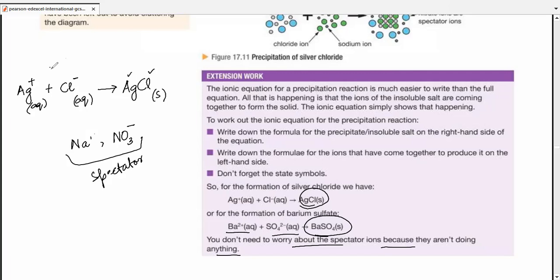You should be able to write ionic equations. You can use the previous method of writing the whole thing up, but this one is an easier one. That's why they talk about writing ionic equations of precipitation reactions are much easier to write than the full equations.